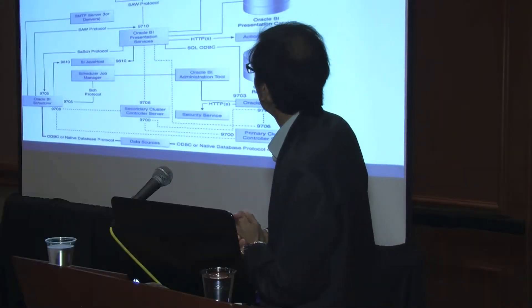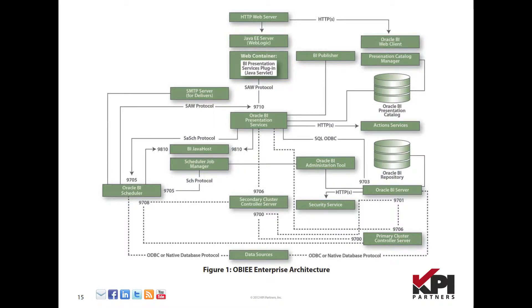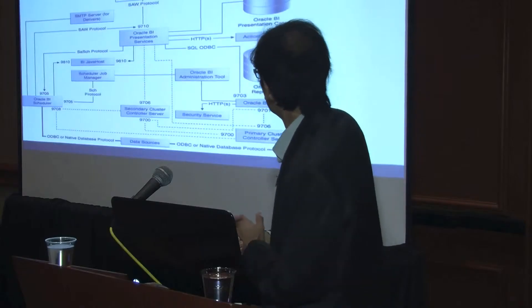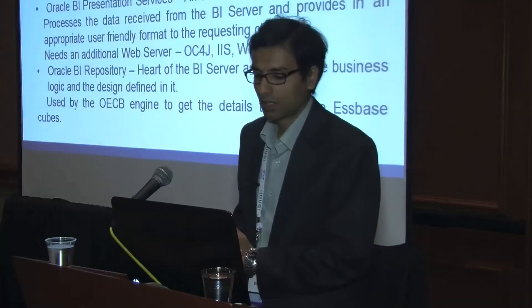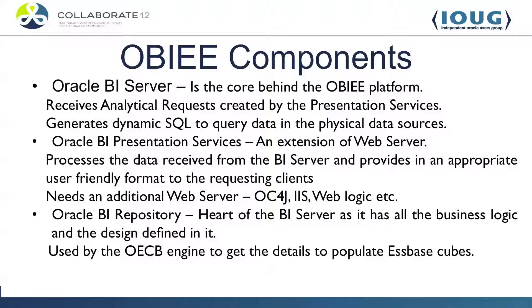Next, let's look at the OBIEE architecture — this is the 11G architecture. You have your Java Enterprise Edition Server, which is your WebLogic, and then you have the presentation services. You have Oracle BI Presentation Services, Oracle BI Scheduler, and the Oracle BI Server, which uses the Oracle BI Administrator tool to read the Oracle BI repository. You also have a cluster controller which handles load balancing. The main components are your BI Server, BI Presentation Services, and BI Repository. I have included only those parts which interact with Oracle Essbase Cube Builder.